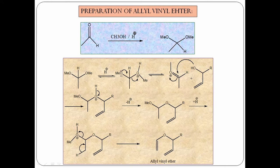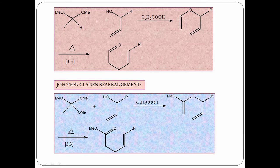For preparation of allyl vinyl ethers: start with a carbonyl compound, treat with methanol under protonation to form a ketal. The ketal is treated with allyl alcohol in the presence of acid — one methoxy group is removed via SN1 mechanism, allyl alcohol attacks the intermediate, and another methoxy is removed to give the allyl vinyl ether. This allyl vinyl ether is subjected to Cope or Claisen rearrangement to give alpha-beta, gamma-delta unsaturated esters.